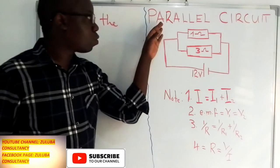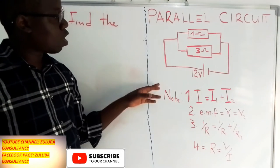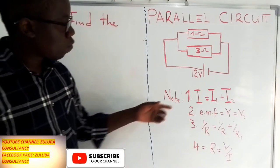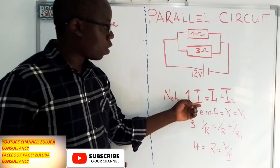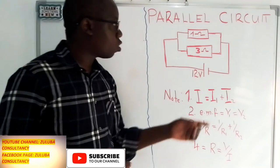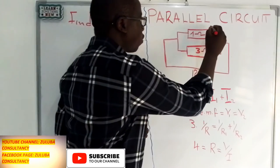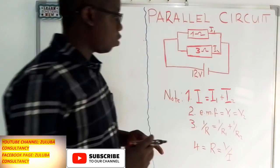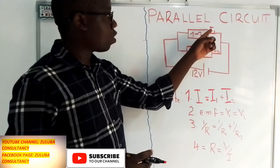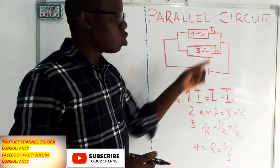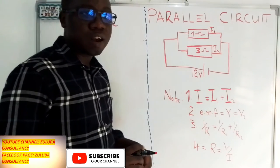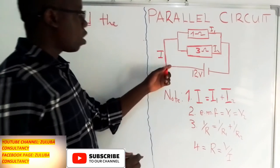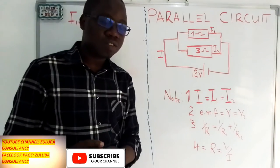When it comes to parallel circuits there are four points that one needs to know. The first one is the total current is equal to the current in the first resistance plus the current in the second resistance. So if you add the current in the first resistance with the current in the second resistance, it gives us the current passing through the main circuit.